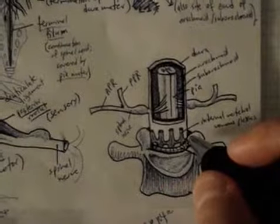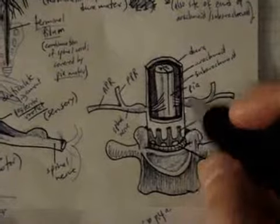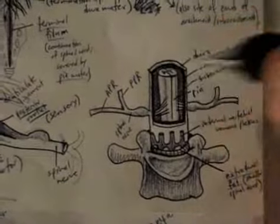Then there is internal vertebral venous plexus, dura mater, spinal dura mater, and then arachnoid mater, pia mater, and spinal cord.